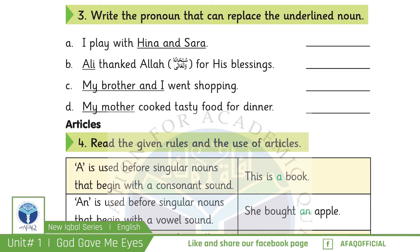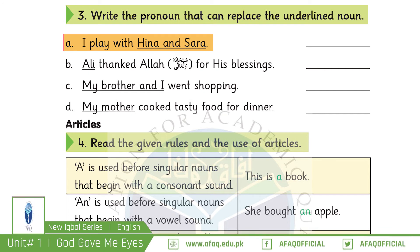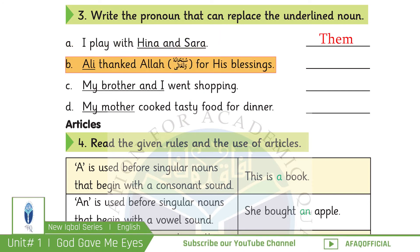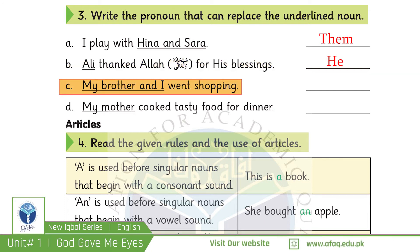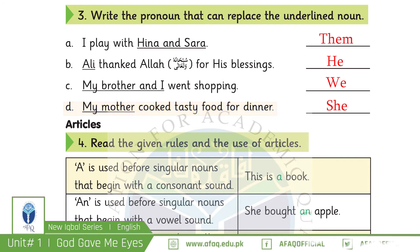Let's have some exercise with pronouns. Write the pronoun that can replace the underlined nouns. 'I play with Hina and Sara' — 'Hina and Sara' are underlined, and 'them' is used for these two nouns. 'Ali thanked Allah for his blessing' — 'He' can be used in place of 'Ali.' 'My brother and I went shopping' — 'We' can be used. 'My mother cooked tasty food for dinner' — 'She' can replace 'my mother' as the objective pronoun.